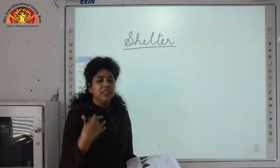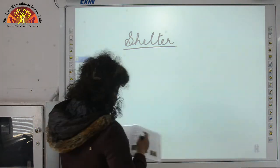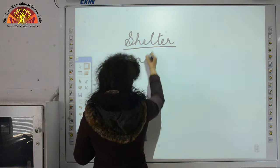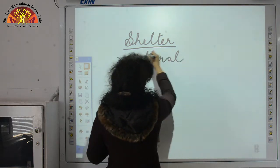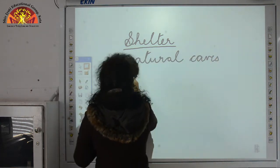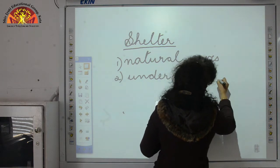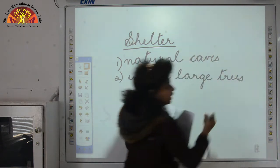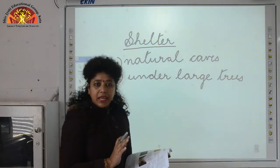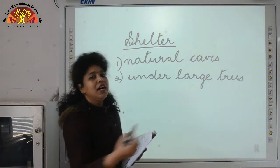So what was the shelter of early humans? That is, where did early humans live? Early humans lived in natural caves and under large trees. They didn't have knowledge about building houses, so they used to live in the open, generally in natural caves or under large trees.